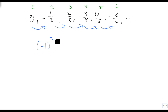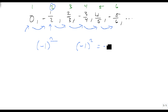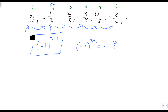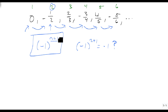We look at the first term and ask: is it positive or negative? It's 0, so that doesn't help us. Looking at the second term — if I plug 2 in, negative 1 to the 2 gives a positive 1, not negative, because it's an even power, so I need to make sure the exponent is odd. We add 1 to the exponent. This handles our alternating signs: positive, negative, positive, negative. So look for where your first negative term is — if it's at an even index, you need to add 1 to the exponent; if it's at an odd index, leave it alone.